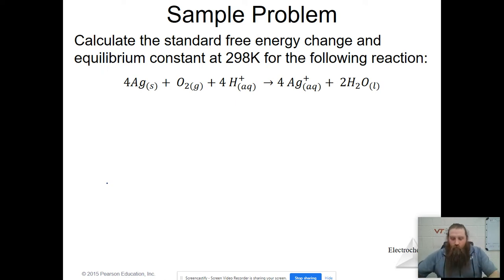The first problem says calculate the delta G prime and K at 298 Kelvin for the following reaction. We have here an voltaic reaction, an oxidation-reduction reaction. So the first thing that we want to do is break this down into our half reactions and identify our reduction and our oxidation. So let's just start with that. We have reduction and we have oxidation.